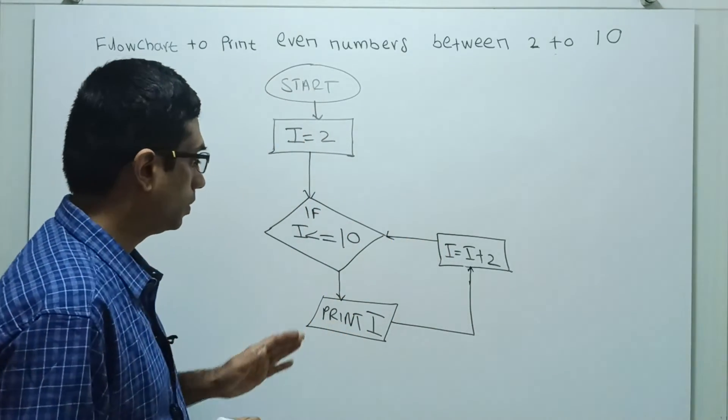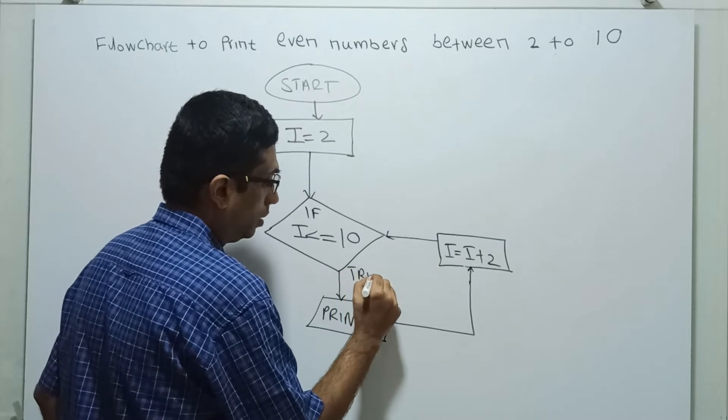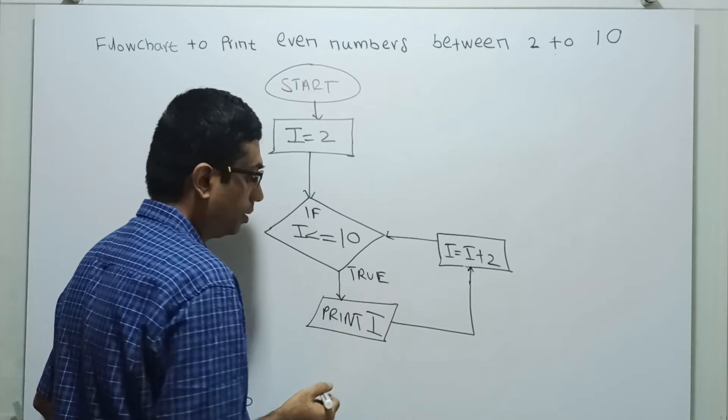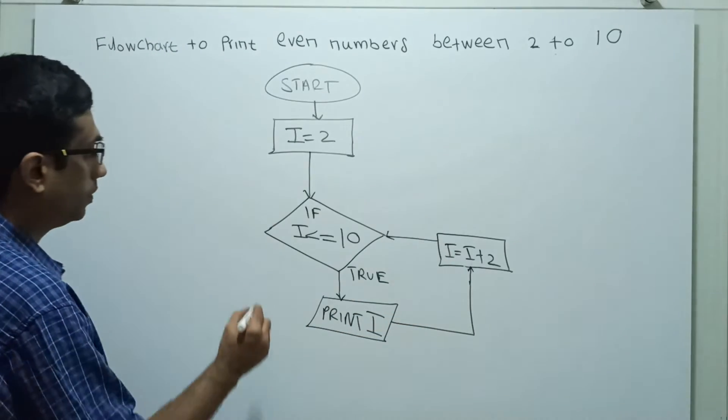So this will go. This is for 2. i less than or equal to 10, then i will get printed. i equal to i plus 2. This is false means...